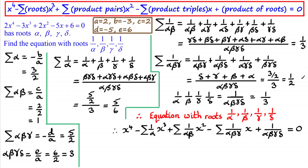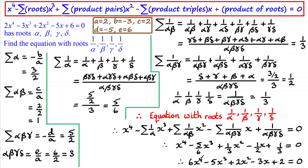I can now substitute all the values into the equation. The result is: x⁴ minus (5/6)x³ plus (1/3)x² minus (1/2)x plus 1/3 = 0. If I want integer coefficients, I multiply through by 6 — the lowest common multiple of 6, 3, 2, and 3. That gives the final quartic equation: 6x⁴ − 5x³ + 2x² − 3x + 2 = 0.